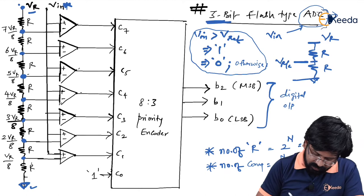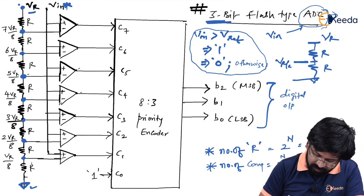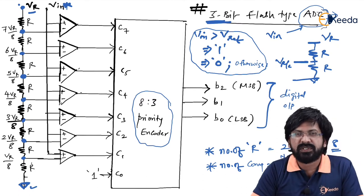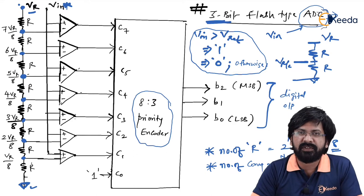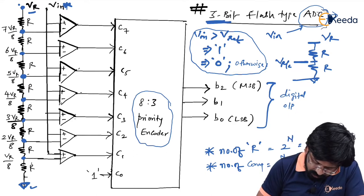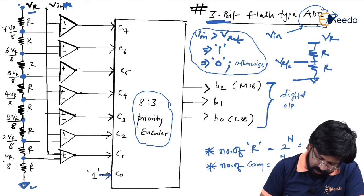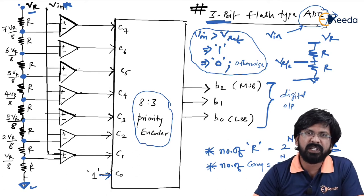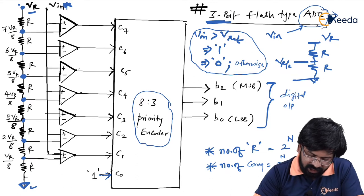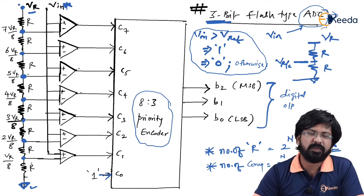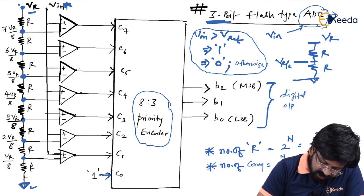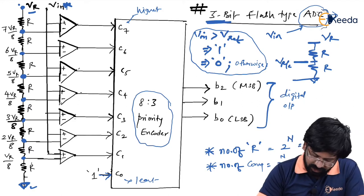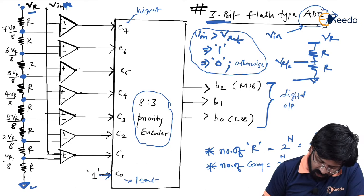The comparator outputs feed an 8-to-3 priority encoder with 8 inputs and 3 outputs. Since there are only 7 comparators, C0 is permanently connected to 1. C1 through C7 come from the comparator outputs. In a priority encoder, C7 has the highest priority and C0 the lowest.